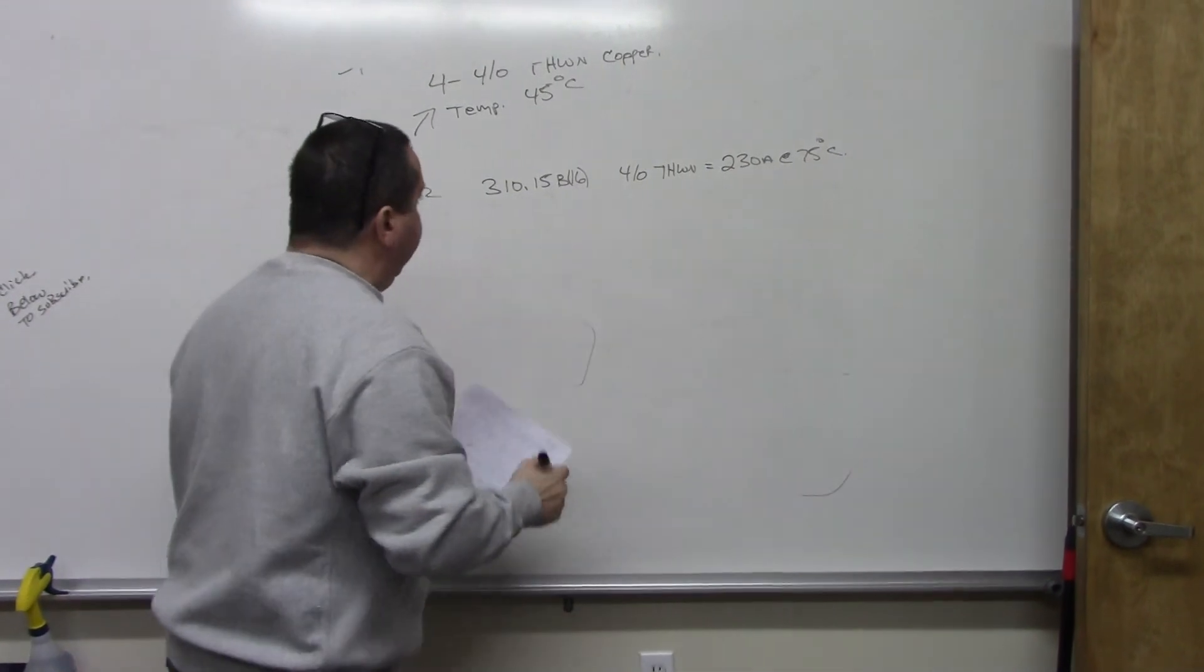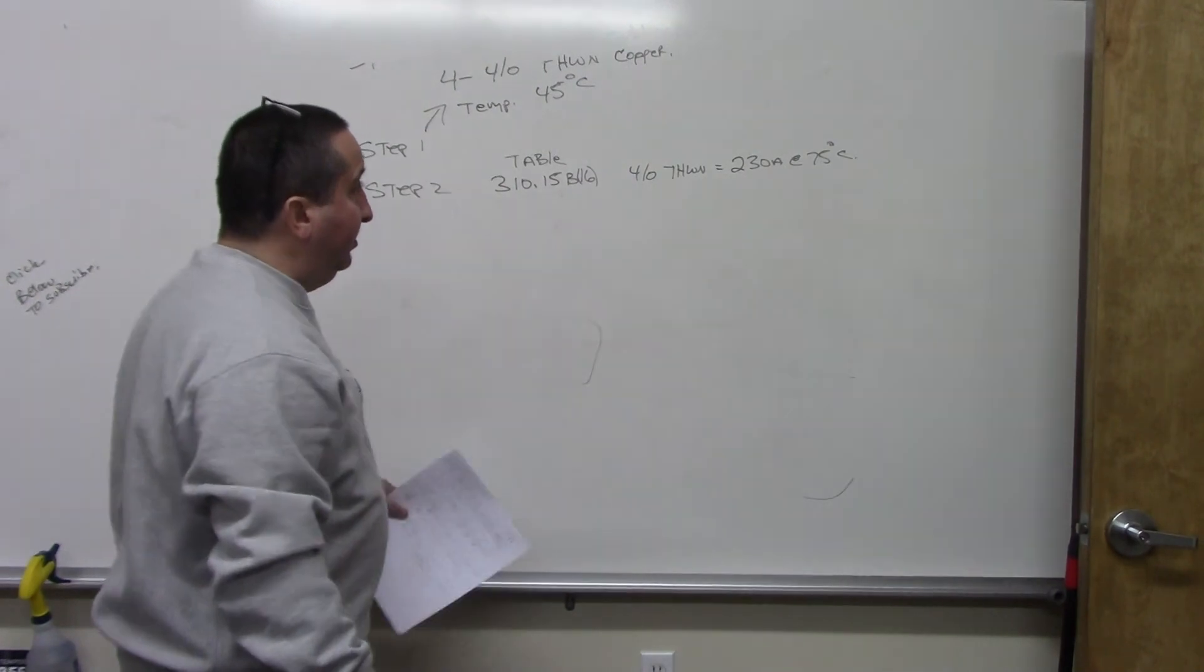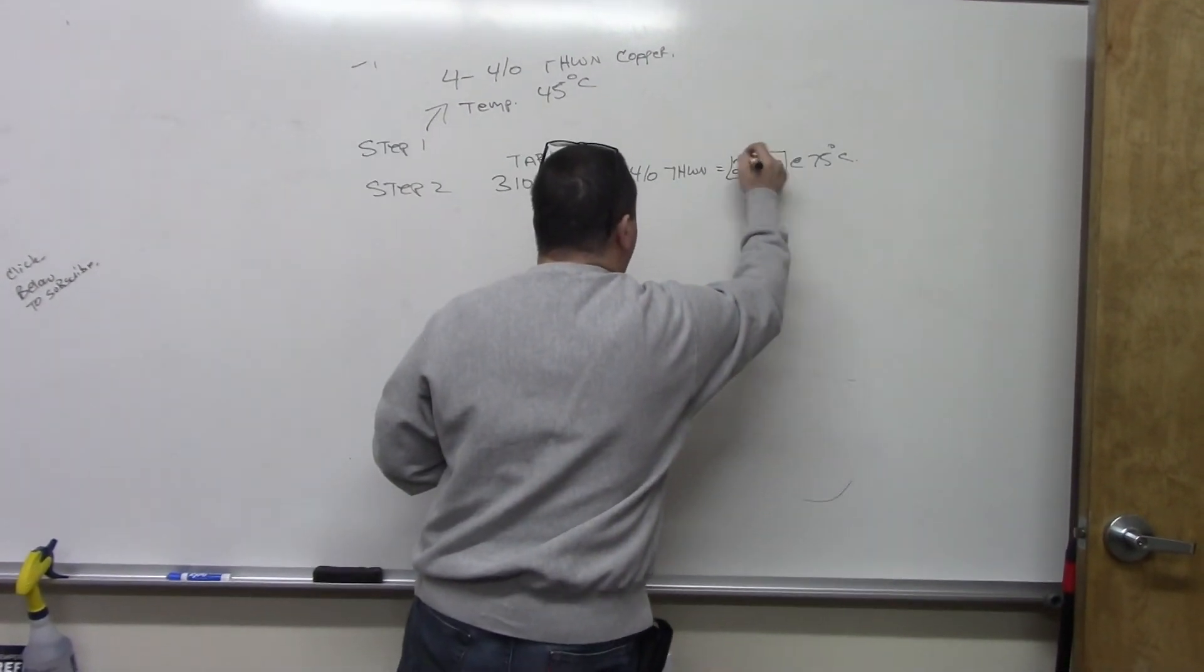we find out that a 4 AWG THWN is equal to 230 amps at 75 degrees Celsius. That's the table you would be going to, and it's copper. So this is the answer right here, 230 amps.